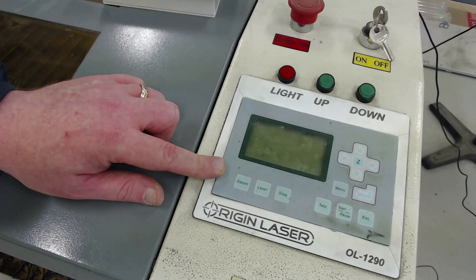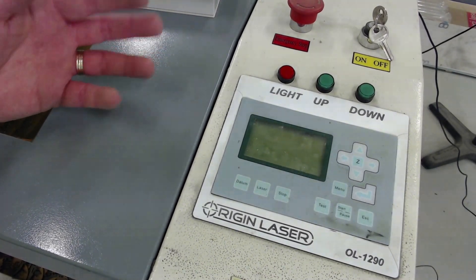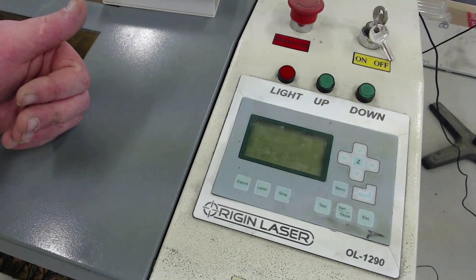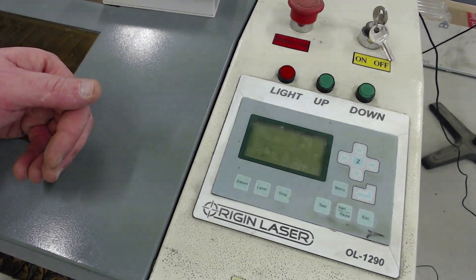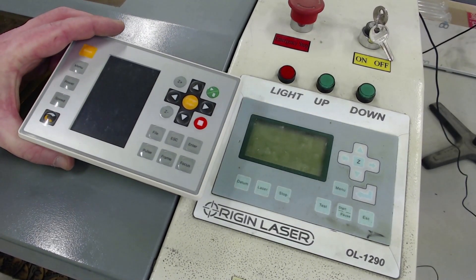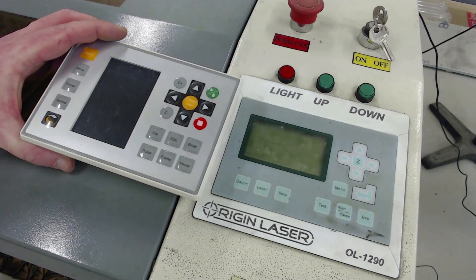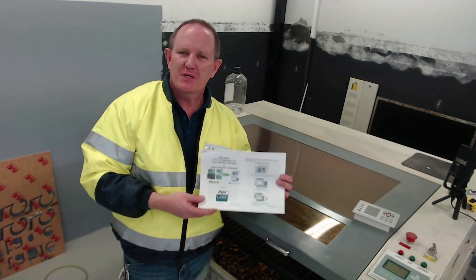The Leetro controller requires its own software and a licensing dongle in order to operate and we're not able to use it with Lightburn software. Because 32-bit systems are harder and harder to find, it's time to upgrade to something that is more compatible with RDWorks and Lightburn and can run on a 64-bit system.